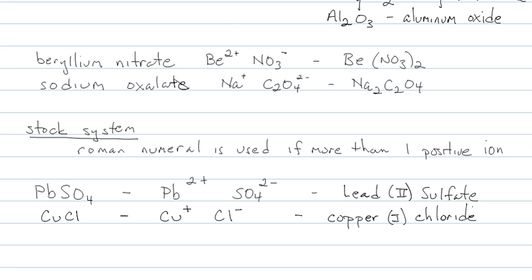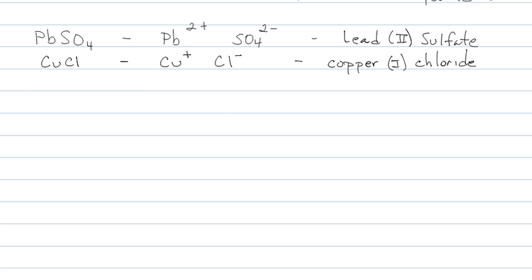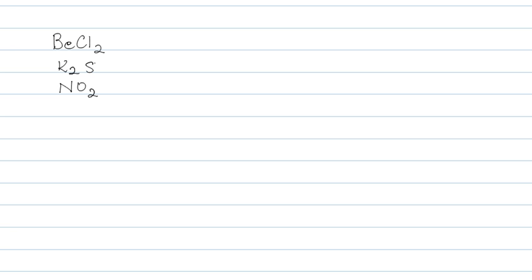So that's our basic naming lesson. I'm going to write down 6 to 7 formulas, and then I want you to pause the video and name them. Then I'm going to write 3 names and I'm going to want the formula. So go ahead, pause the video, and name these 7 things.